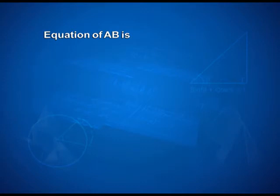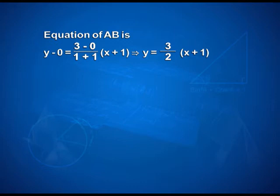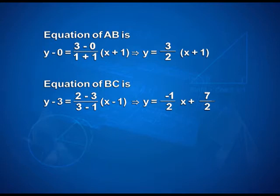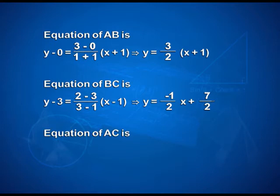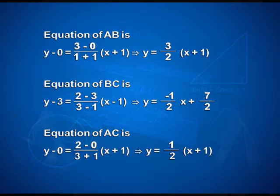First, we calculate the equation of line AB: y - 0 = (3-0)/(1+1) × (x+1), giving y = (3/2)(x+1). Equation of BC: y - 3 = (2-3)/(3-1) × (x-1), giving y = (-1/2)x + 7/2. Equation of line AC: y - 0 = (2-0)/(3+1) × (x+1), giving y = (1/2)(x+1).